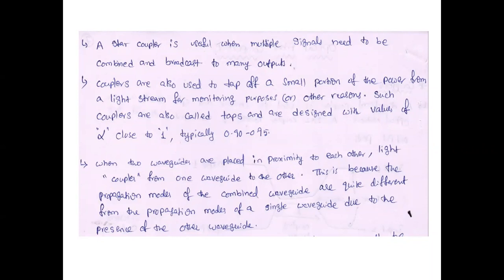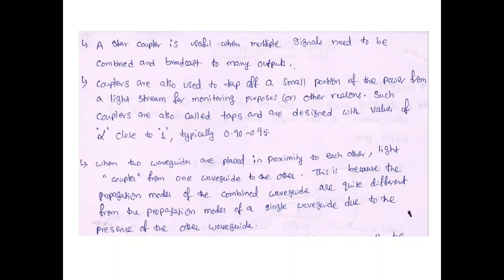The star coupler is useful when multiple signals need to be combined and broadcast to many outputs. Couplers are also used to tap off a small portion of power from the light stream for monitoring purposes. For example, at a given point in the network you need to check how much power is being transmitted — fix a power meter there and check the power at different locations.